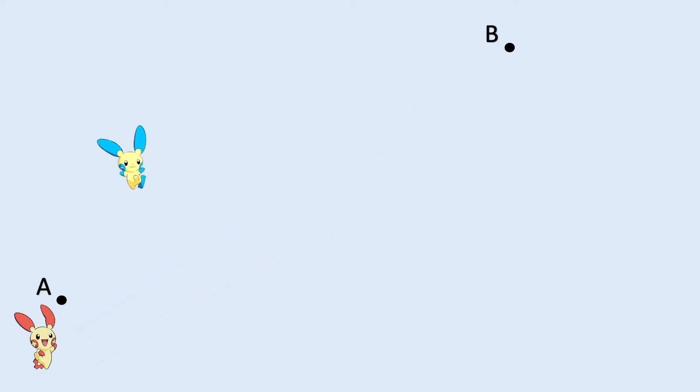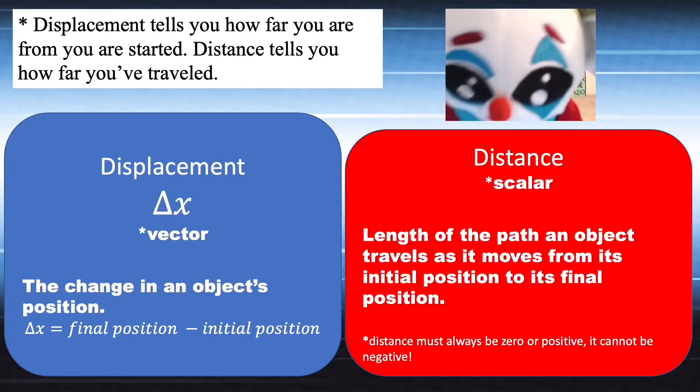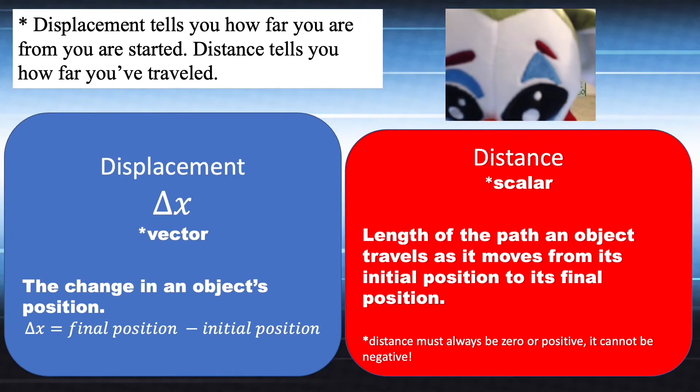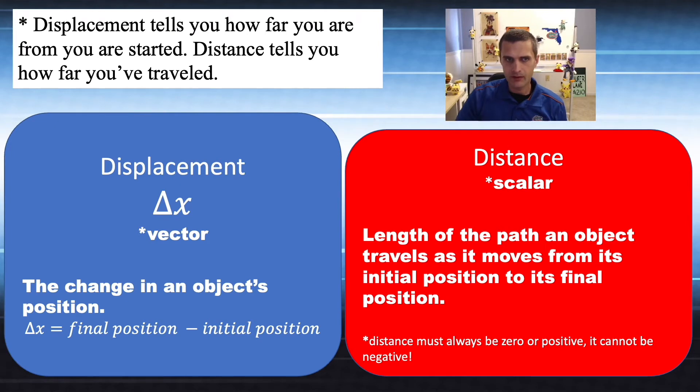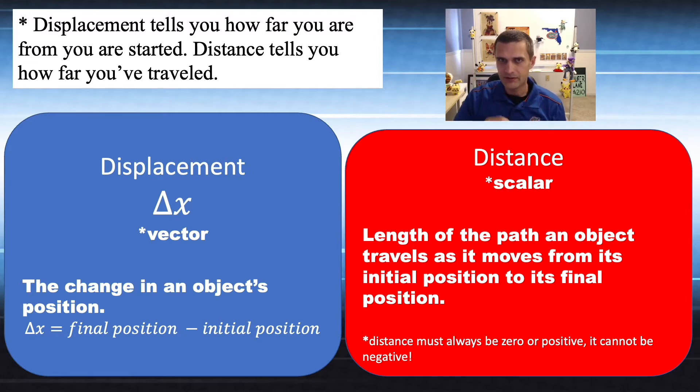Here are the two Pikachus again, both trying to get from point A to point B. Pikablu takes a winding path and travels quite a large distance. The red Pikachu goes straight there. They both traveled different distances, but they both have the same change in position. The first vector versus scalar comparison is distance versus displacement.